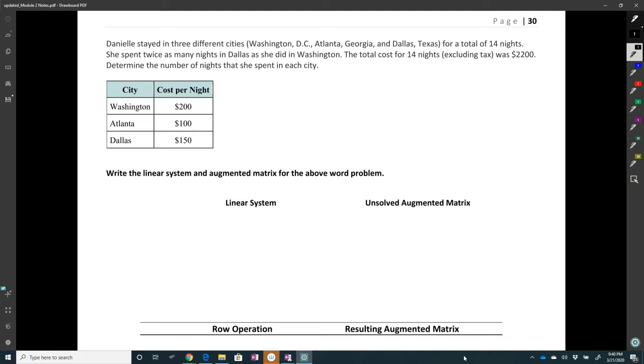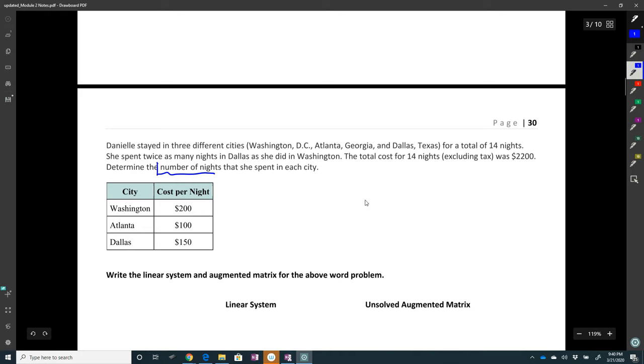All right, so this word problem is a little more straightforward than the other one. I wanted to do the harder one with y'all. But anyway, we're looking at this equation about Danielle staying different nights in three different cities. And remember, what they're looking for is always going to be the variables. So they say determine the number of nights. So if you want to find the number of nights, that's the unknown. So I'm going to let x equal the nights in D.C., y is going to be the nights in Atlanta, and z is going to be the nights in Dallas.